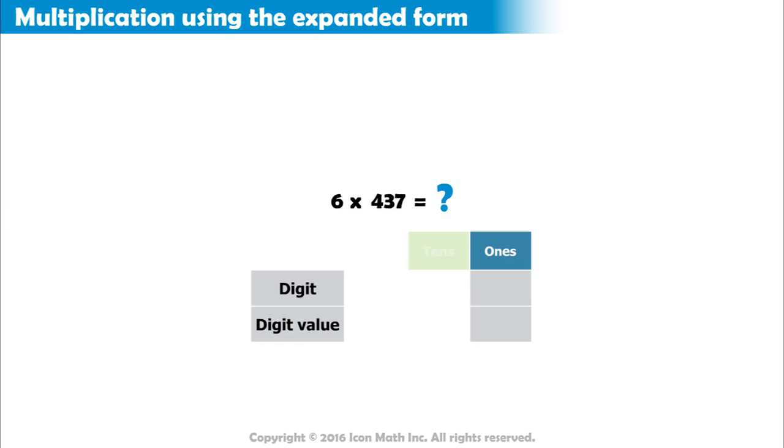Looking at place values, we see that in the number 437, 7 is in the ones place. So, its value is 7, while 3 is in the tens place. So, its value is 30.